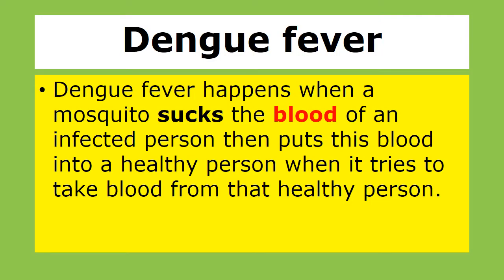Dengue fever happens when a mosquito sucks the blood of an infected person, then puts this blood into a healthy person when it tries to take blood from that healthy person.